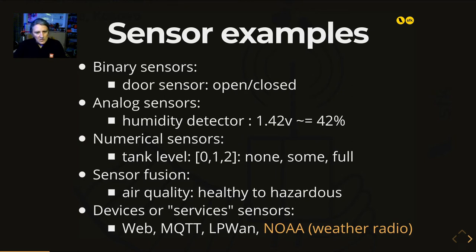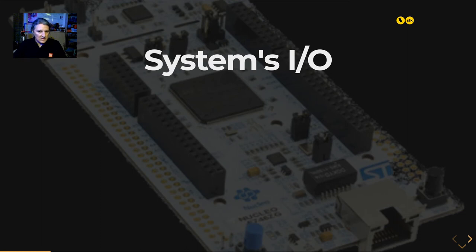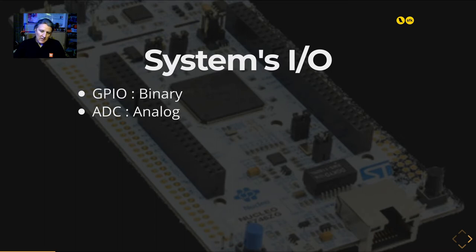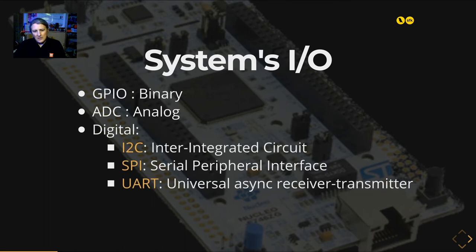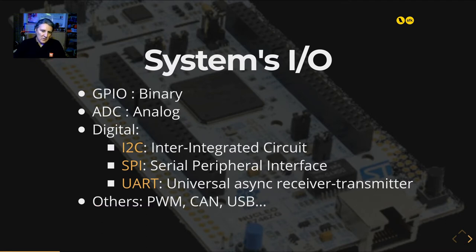I will only speak about the first four sensor types mentioned. Now let's talk about your system — a computer — and its different input/output ways to interact with the outside. For binary results we use GPIO; for analog we use ADC input; for digital values we use different buses like I2C, SPI, and UART. There are also other buses like pulse-width modulation, CAN bus from automotive, USB, and other I/O standards.